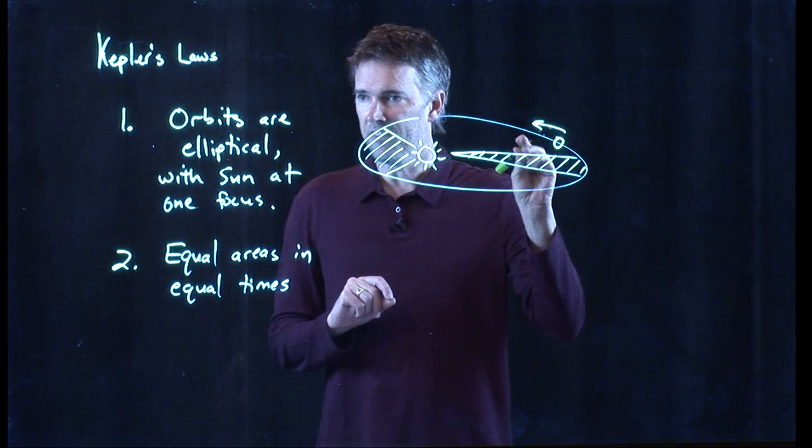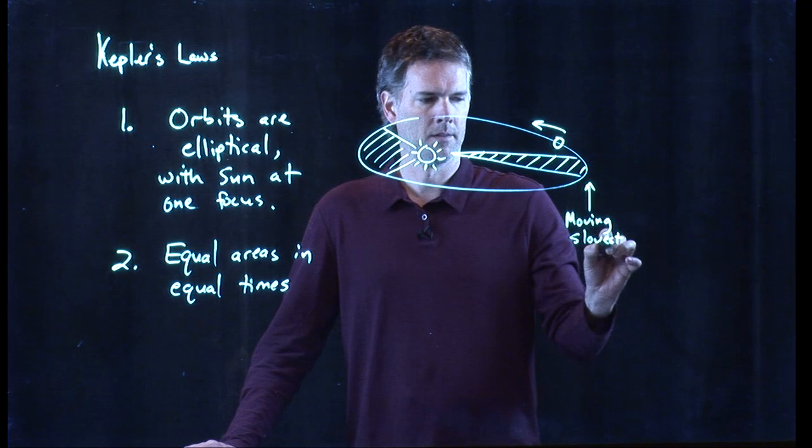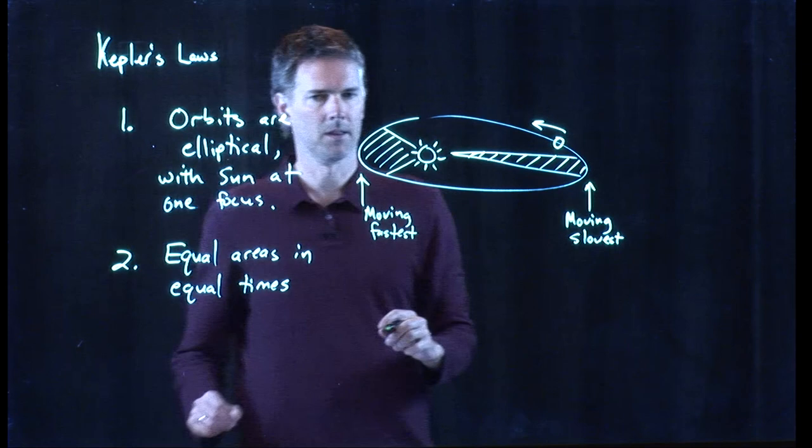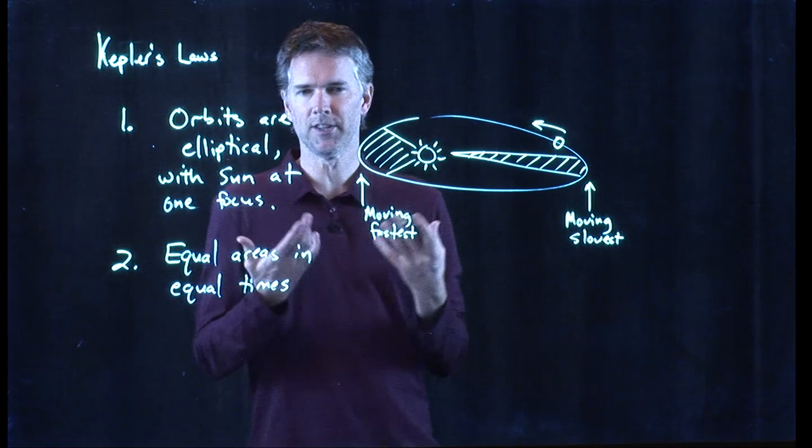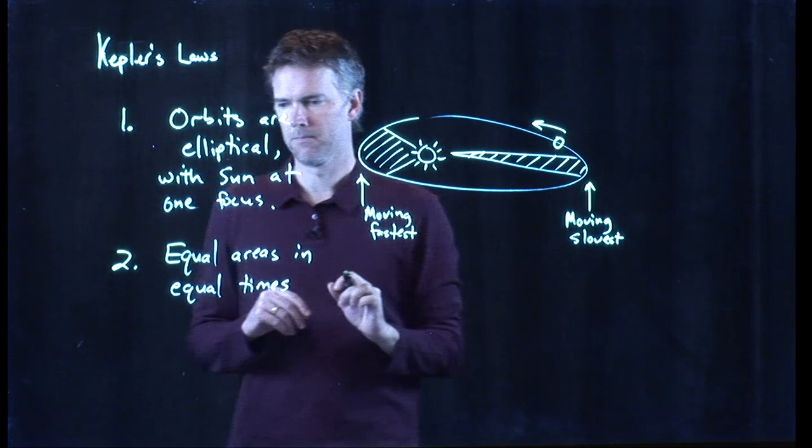Equal areas and equal times. So if this is one month of an orbit, you get some number. One month of an orbit, you get the same number. This necessarily tells you that the planet is moving slowest out here in order to get the same area as this region, where it is moving fastest. The planet kind of zips in towards the Sun, goes back out, slows down a whole bunch, and then comes and does it again. And this is sort of like the slingshot that you guys have heard, the gravitational slingshot. When an object goes past a massive object, it is moving fastest when it's closest to it, and then it shoots back out.